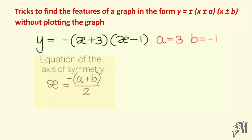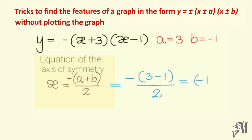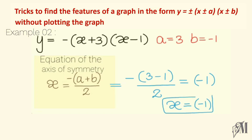Now let's see how to get the equation of the axis of symmetry. Substituting: minus (3 minus 1) divided by 2 — 3 minus 1 is 2, times minus is minus 2, divided by 2 is minus 1. So x equals minus 1 is the equation of the axis of symmetry of the given function.